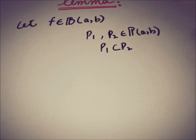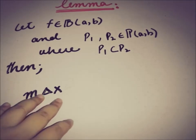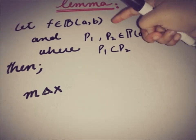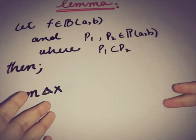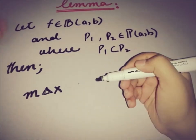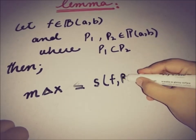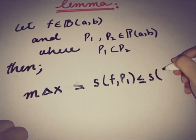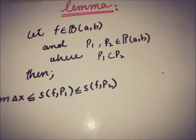Given these conditions, we can say that small m·Δx — where small m is the infimum of the values of the function over the region [a, b] and Δx is the length of the interval b minus a — is less than or equal to the lower sum s(f, P1). And this is less than or equal to s(f, P2), the lower sum on partition P2.